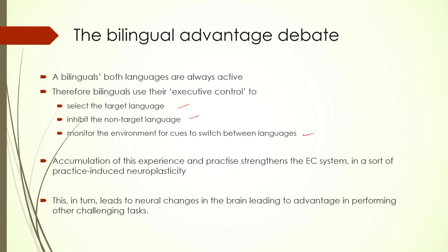Code mixing and code switching are very common in bilingual societies. Bilinguals are always alert, looking for cues in the environment based on which they may need to change - keeping one language active, suppressing another, while also keeping the possibility of shifting open. That needs a very fine-tuned control mechanism. The accumulation of this experience - the number of years that you have spoken two languages - is an important variable. This accumulation and practice strengthens the executive control system in a kind of practice-induced neuroplasticity.